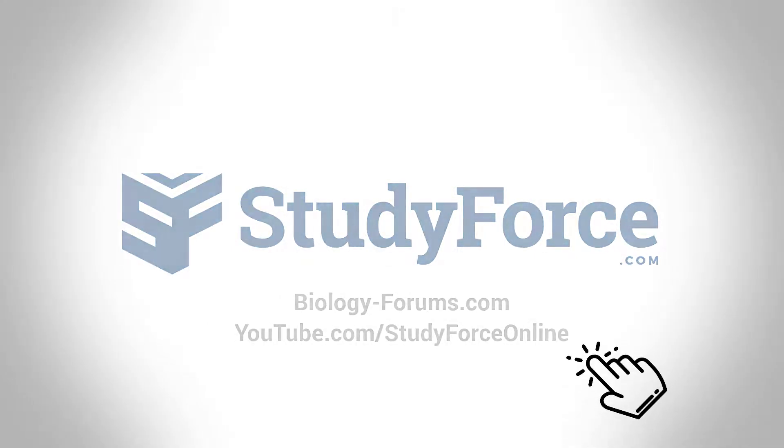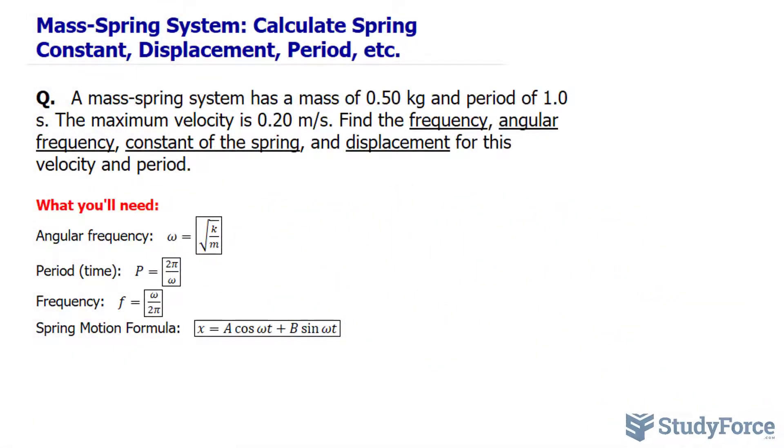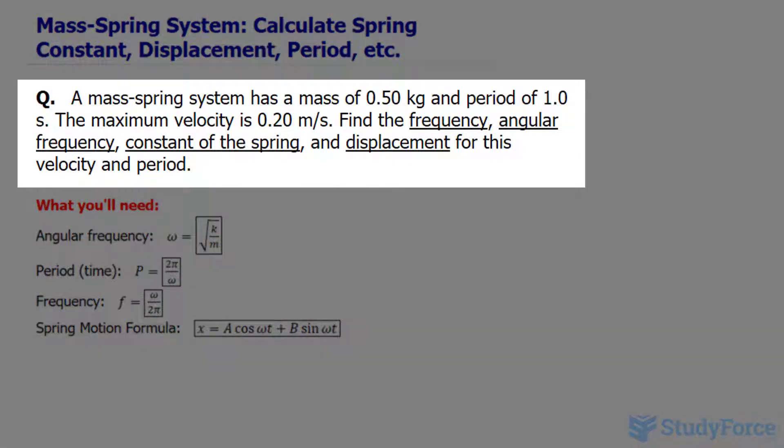In this lesson, I'll show you how to calculate the spring constant, displacement, and period of a mass-spring system. The question reads: a mass-spring system has a mass of 0.5 kilograms and a period of 1.0 seconds. The maximum velocity is 0.2 meters per second.